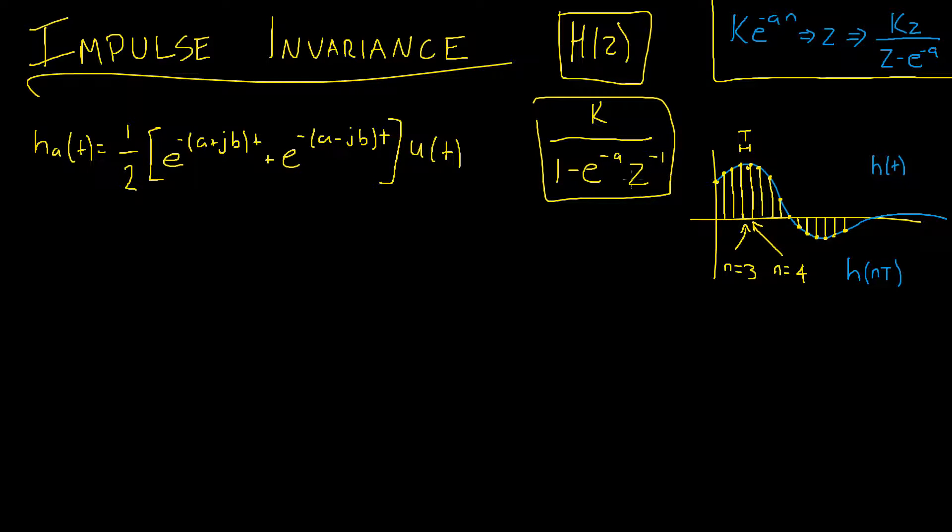Now if you're unfamiliar why we want our Z terms to have a negative power, it actually just indicates a delay in the digital filter, but we'll go into that in much more depth in future videos.